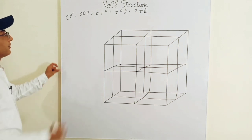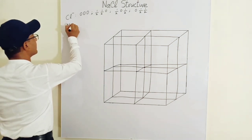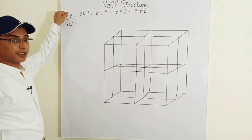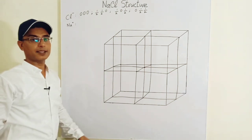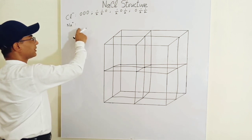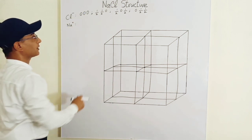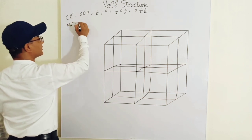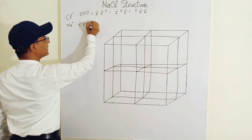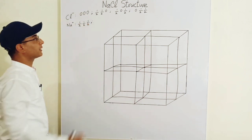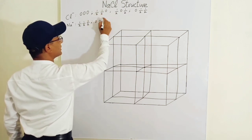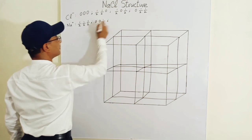Similarly, for the sodium ion — remember, the valency of the chlorine ion is negative and the valency of the sodium ion is positive. For the sodium ion, it's quite easy to locate the sodium ions if you know the chlorine ion's location. If there's any zero, just write half, and if there's a half, write zero. This is how you can get the positions of the sodium ions.